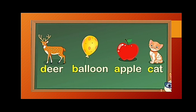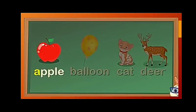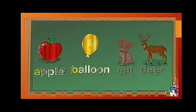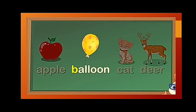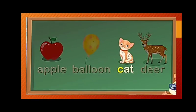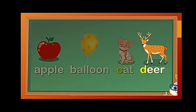Let us see how we can arrange them in alphabetical order. This is the correct order. The first letter comes apple, then the second balloon, then cat, and then deer. This is the correct alphabetical order of these words.